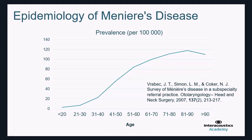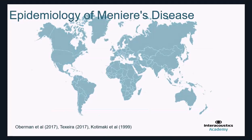Looking at one study on the epidemiology of Ménière's disease — Fabré et al. in 2007 — surveying a subspecialty referral clinic, we find that as we reach the fourth, fifth, sixth, and seventh decade there is much greater prevalence of Ménière's disease in the population. We should note that prevalence per 100,000 may also be influenced by other conditions being misreported as Ménière's disease.